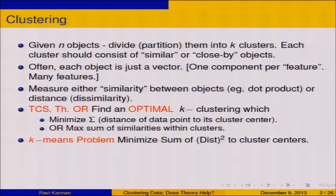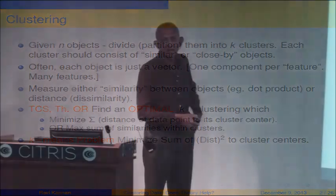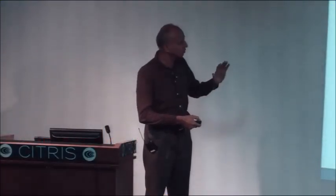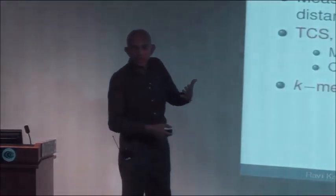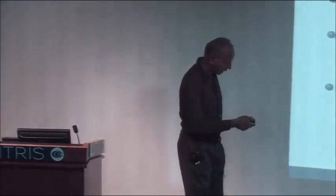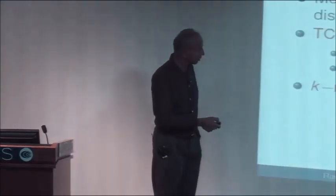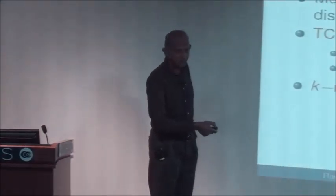We'll focus on the k-means problem, where you minimize the sum of squared distances to cluster centers. It's an interesting phenomenon that in theoretical computer science, you almost always consider just sum of distances, while outside of theoretical computer science, you almost always consider sum of distance squared. I'm going to step outside and consider sum of distance squared. Distance squared has some very nice properties, for instance in linear algebra — least squares fit. Mathematically, it's nicer to consider distance squared.